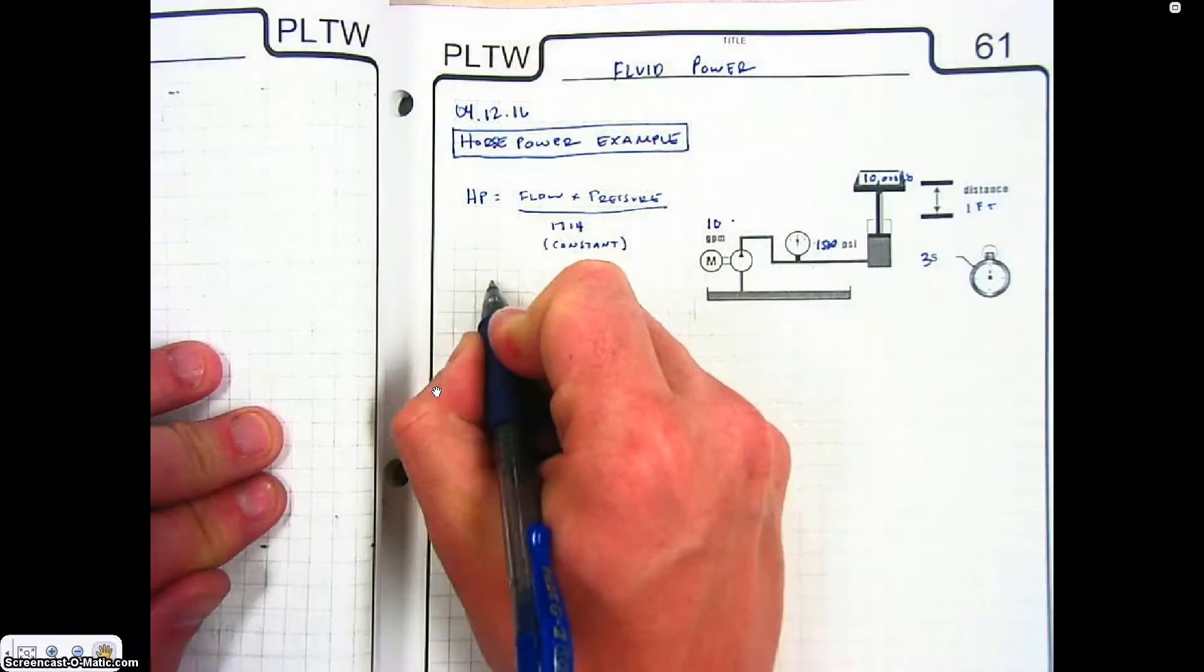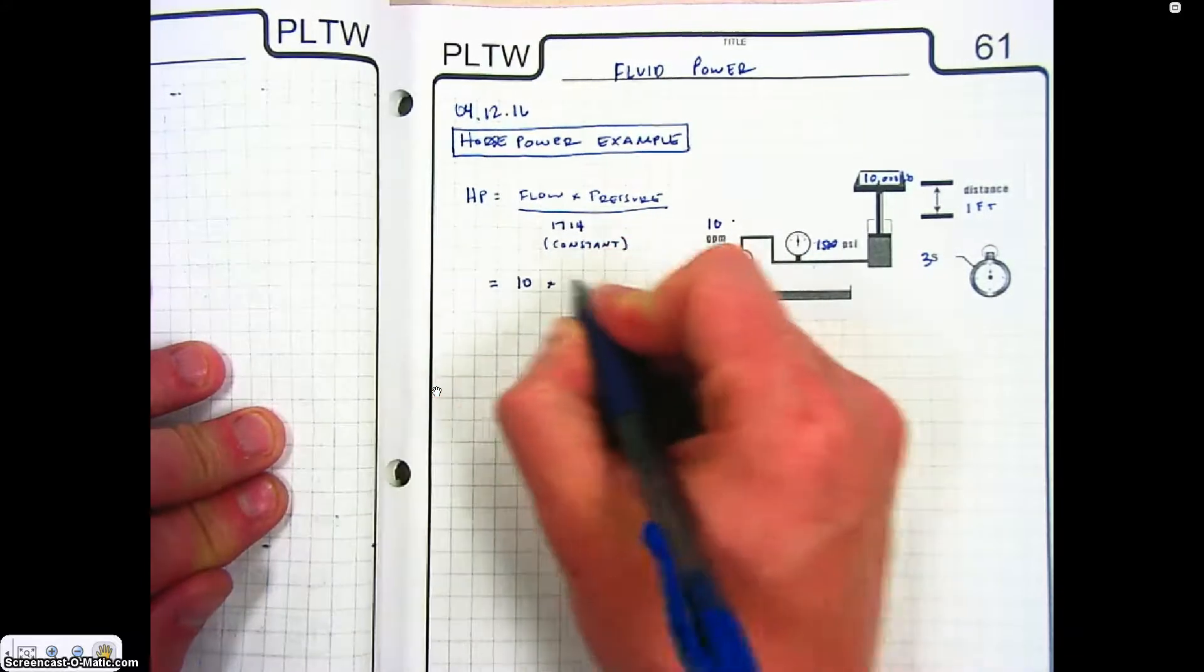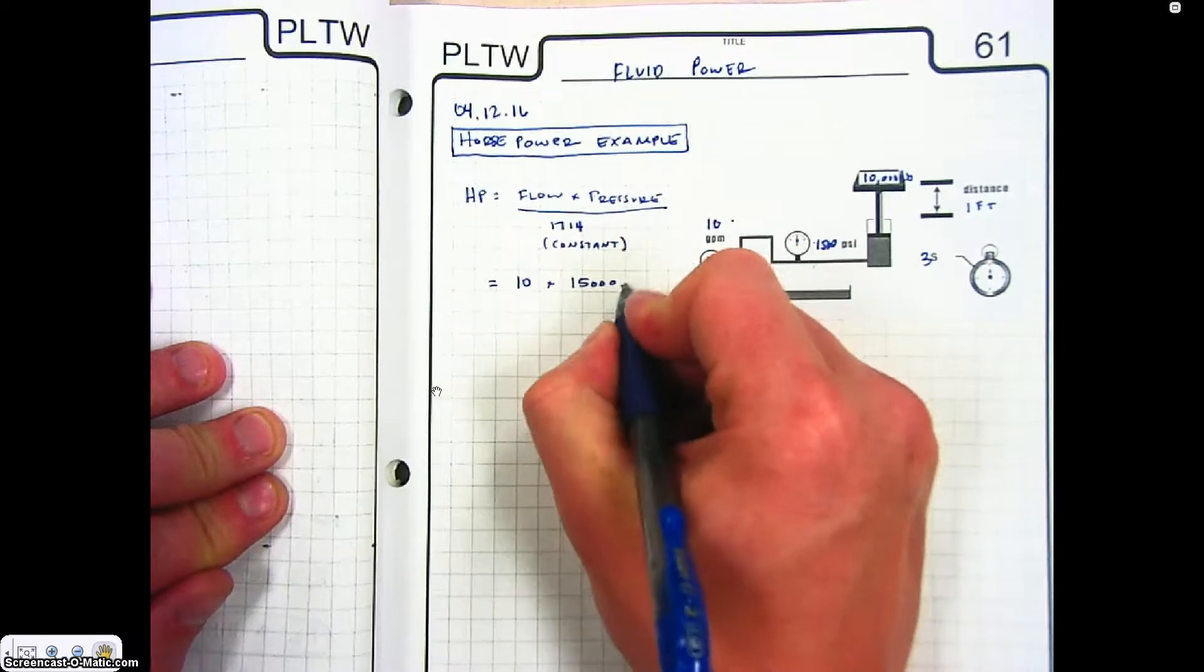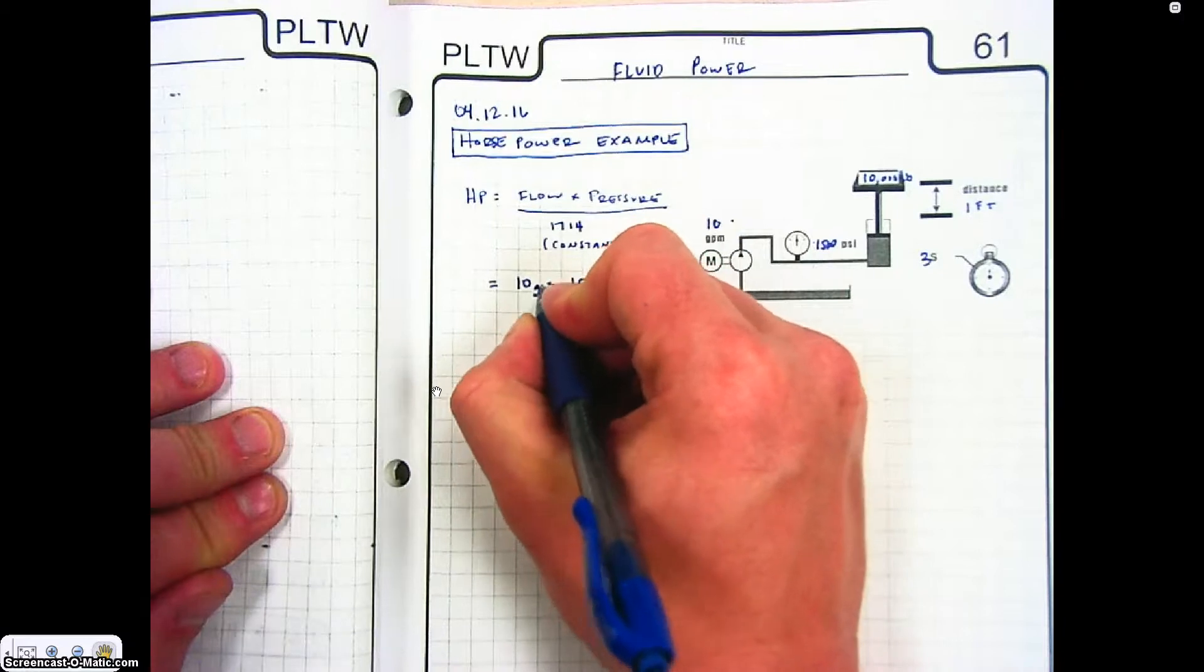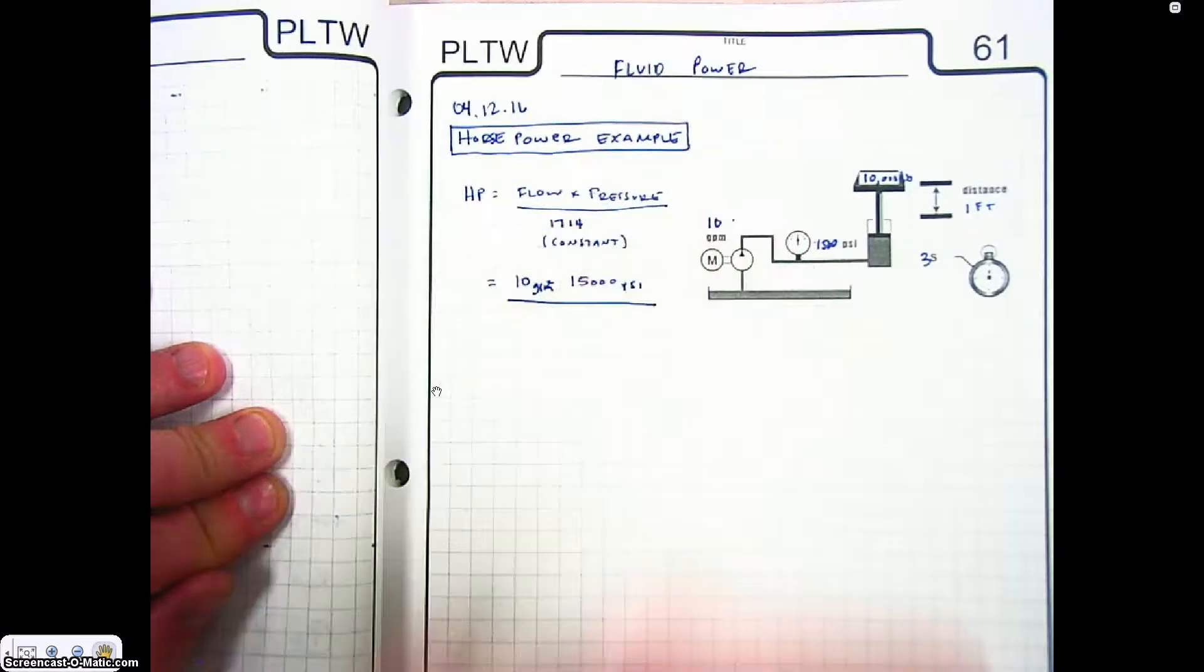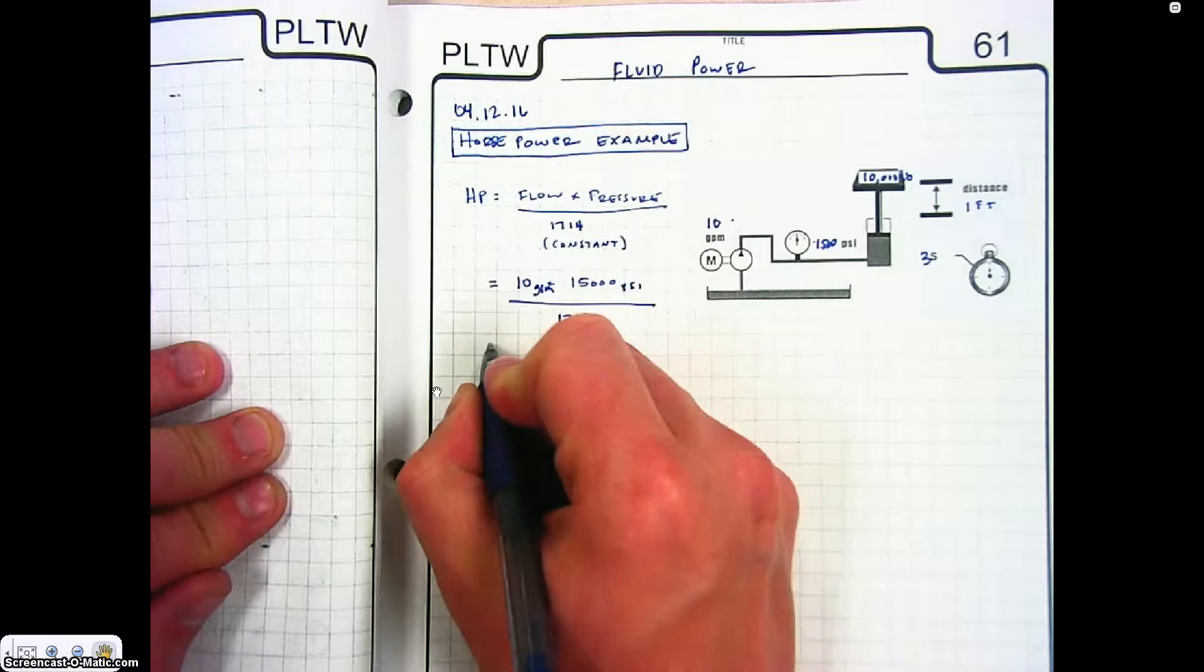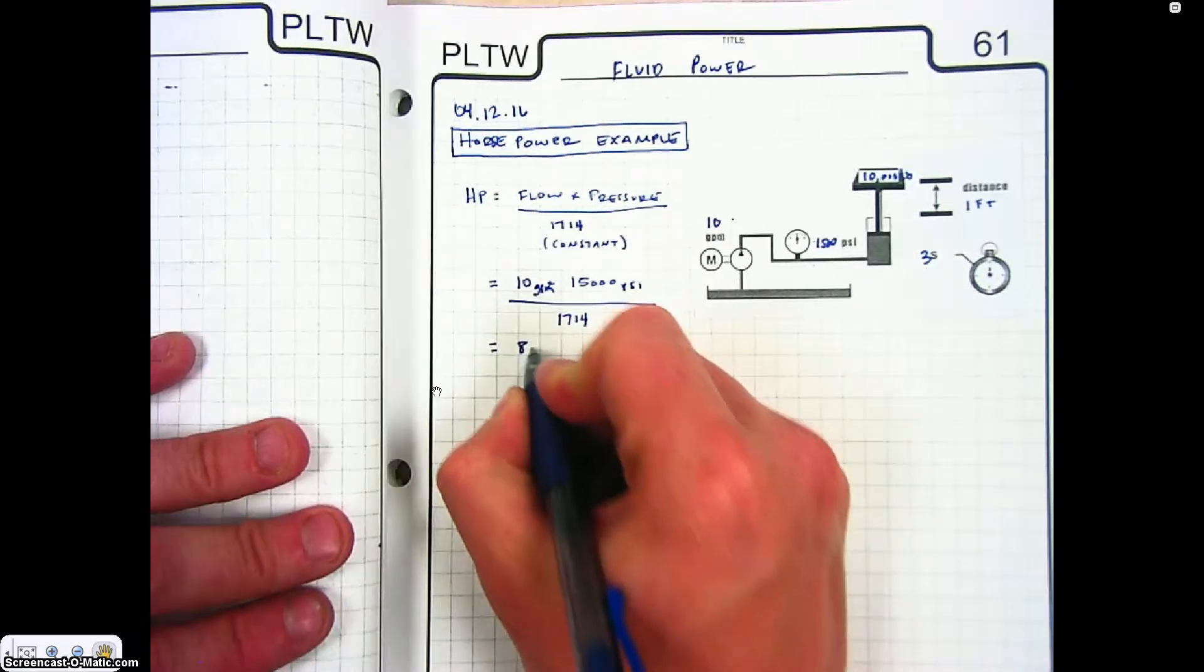And so it's going to be equal to the flow of 10 gallons per minute times the pressure of 1500 PSI, divided by 1714, and we get a horsepower of 8.75.